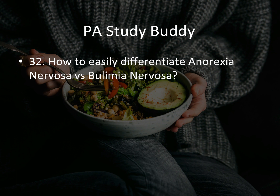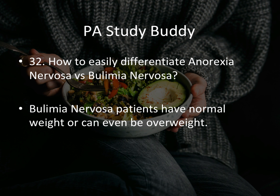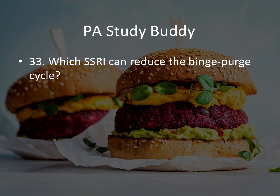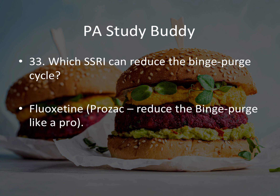Question thirty-one: how to easily differentiate anorexia nervosa from bulimia nervosa? The best way: bulimia nervosa patients have normal weight or can even sometimes be overweight. If they tell you a patient is overweight, you know that's not an anorexia patient. Question thirty-two: which SSRI can reduce the binge-purge cycle? The answer is fluoxetine — Prozac. Reduce the binge-purge cycle like a pro. So: prazosin for nightmares, propranolol for performance anxiety, and Prozac for binge-purge issues.